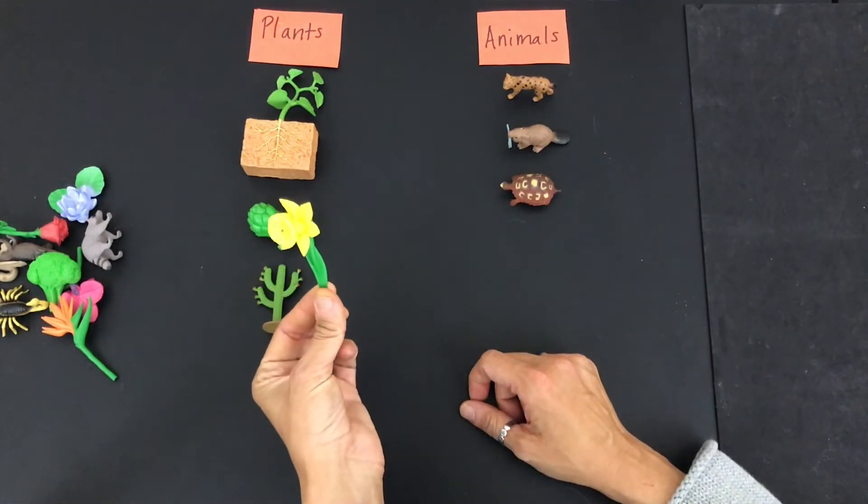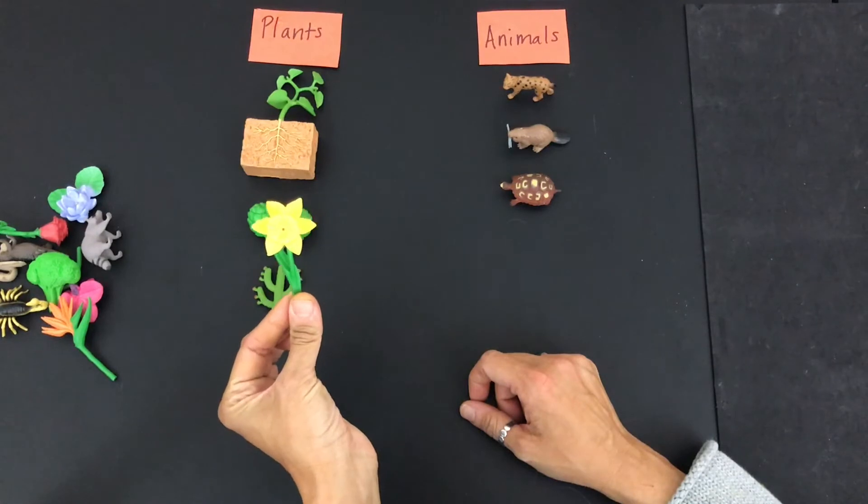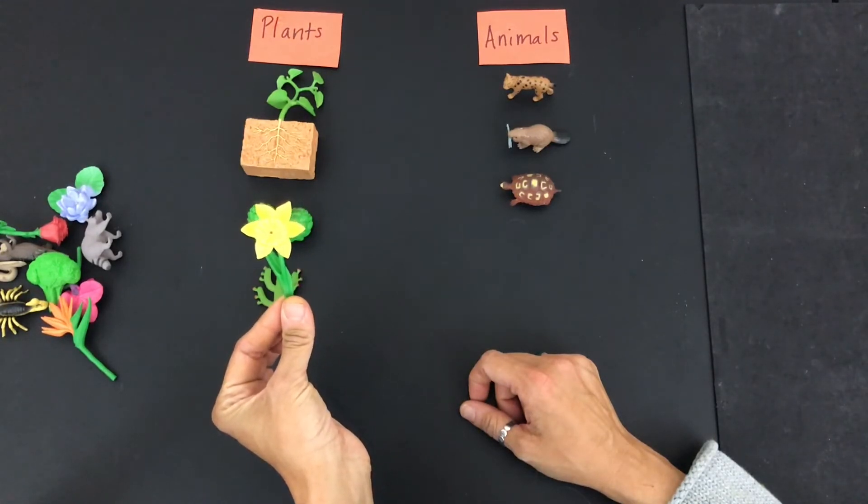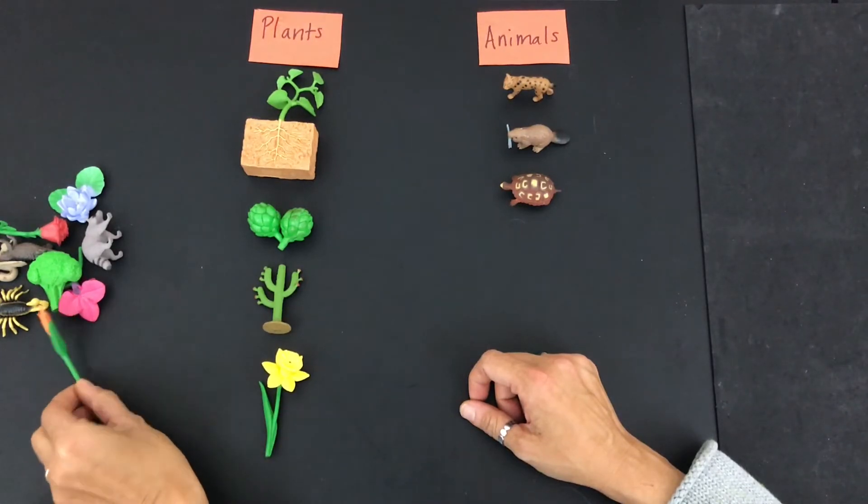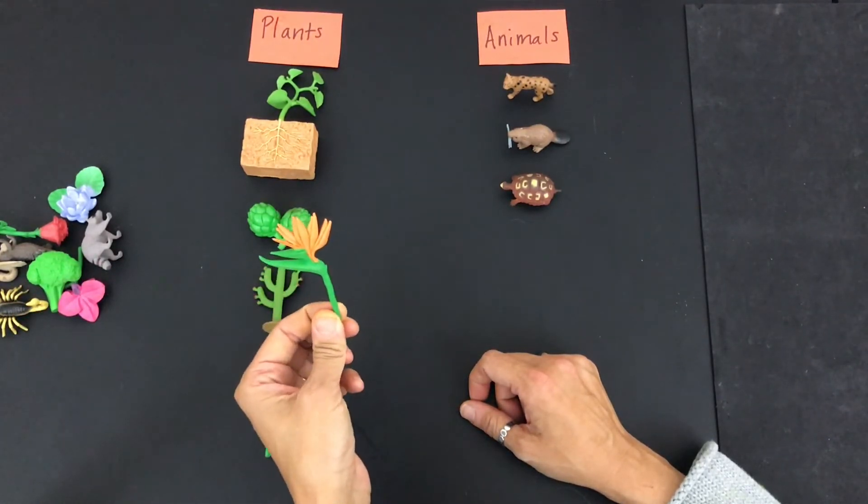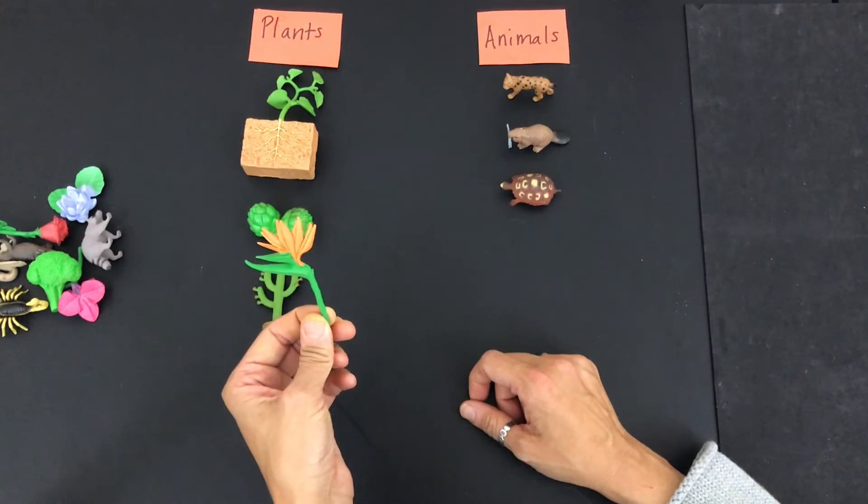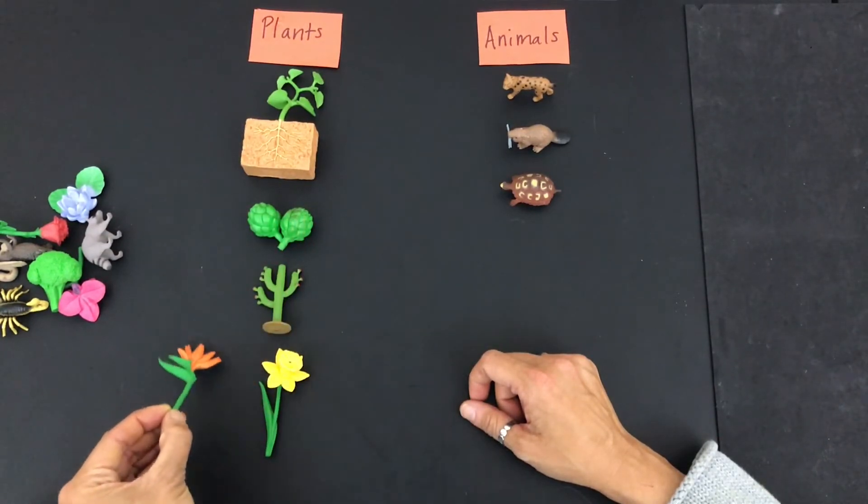How about this daffodil? Yes, it's a plant. And what about this flower called a bird of paradise? Yes, it's also a plant.